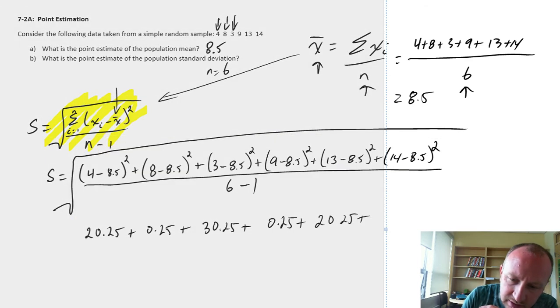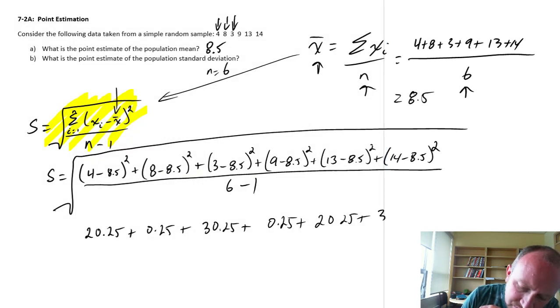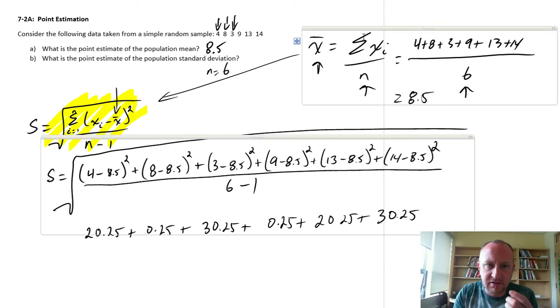And lastly, 14 minus 8.5. 30 and a quarter. So now we have all of the deviations squared.